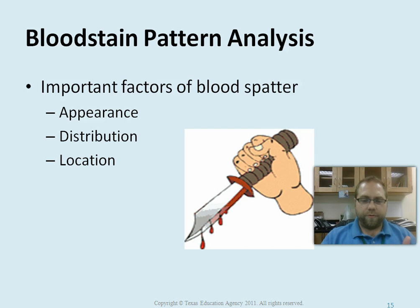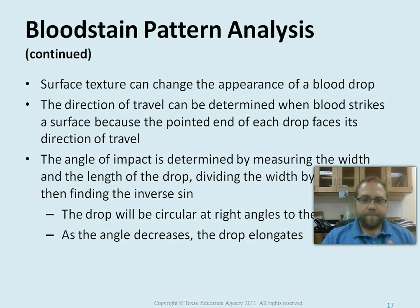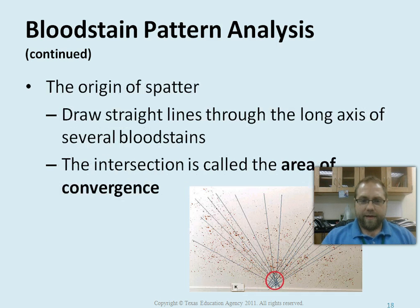For bloodstain patterns, appearance, distribution, and location are three important factors. You need to know the difference between passive stains — dripping from gravity — transfer stains like shoe prints or handprints rubbing against a surface, and projected stains which are actual blood from impact hitting a wall or surface. Surface texture changes the appearance of the drop. Direction of travel — the way it points — faces the direction of travel. For angle of impact, you take the width divided by the length to get the arc sine. Drawing lines from several bloodstains, where they intersect is called the area of convergence.